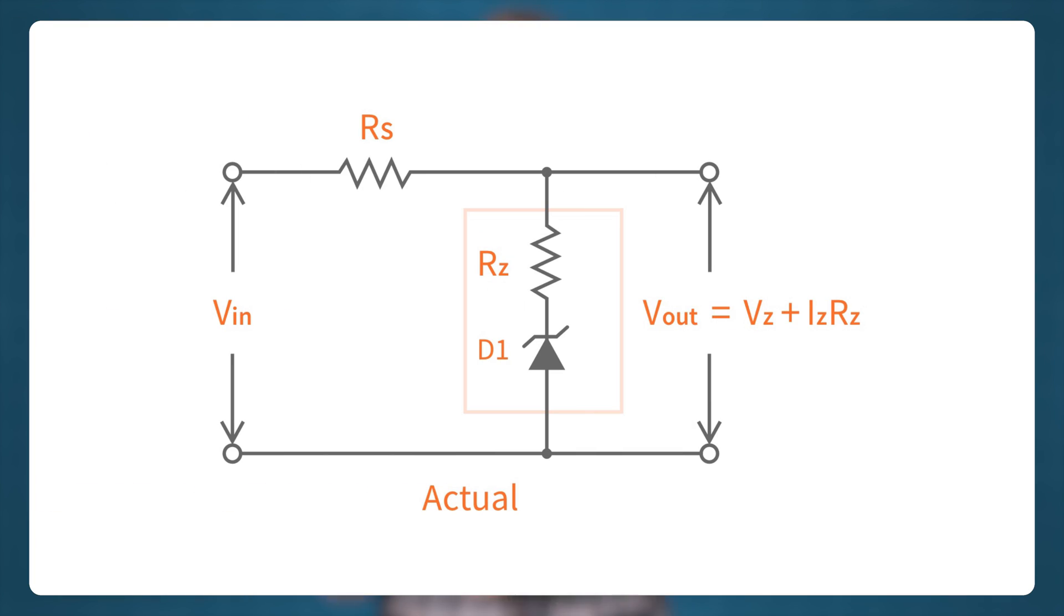Also, in reality, the output voltage slightly varies due to Zener impedance. Changes in load current produce changes in Zener current. Consequently, the output voltage also changes. Therefore, the use of this circuit is limited to only such applications where variations in load current and input voltage are small.